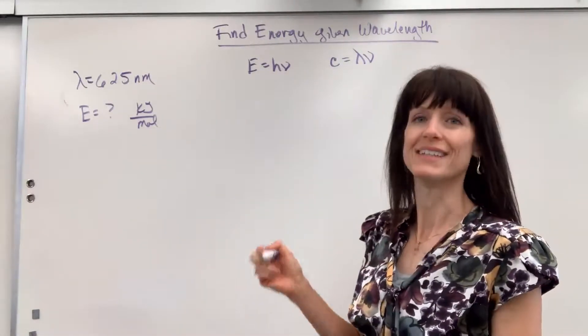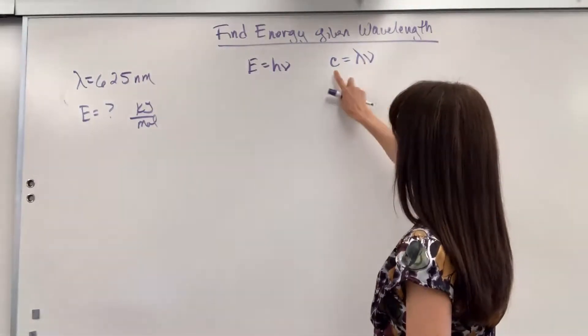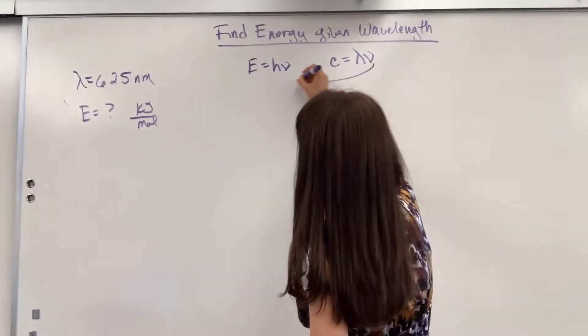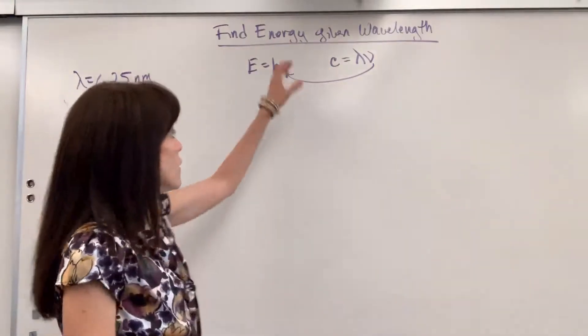So this is a two-step. We are going to use lambda and speed of light to find wavelength, and then we will plug it into this formula. So we're actually going to use both formulas.